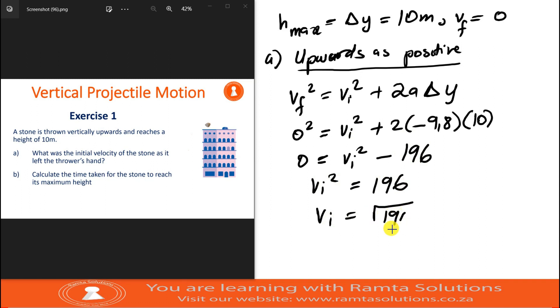Of course I must say plus minus, but because the stone was thrown vertically upwards, we can say it is positive 14 meters per second upwards. This is how you find your initial velocity.